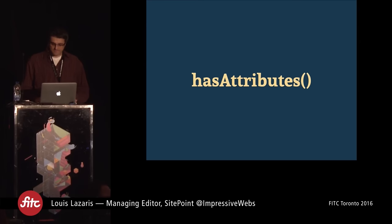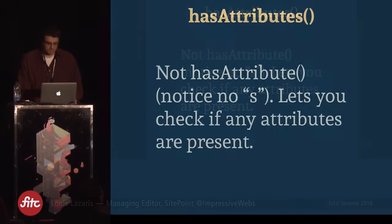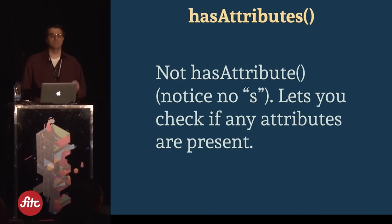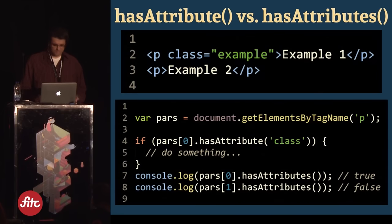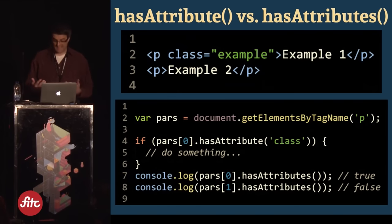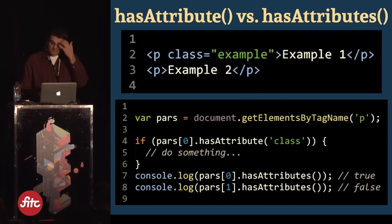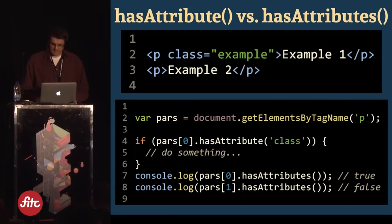Let's look at hasAttributes — note the S on the end, making it different from hasAttribute. This lesser-known method lets you check the existence of any attributes, nothing specific. With two paragraph elements — one with an attribute, one without — you can use hasAttributes to check if each paragraph has any attributes at all. It returns true or false. The first paragraph with attributes returns true; the second does not.